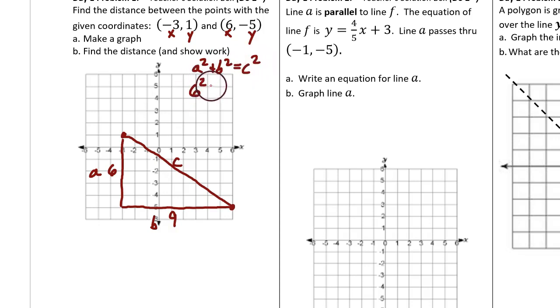Substitute in 6 and 9. And then evaluate the left side. This makes 117 equals C squared.